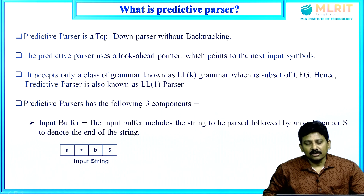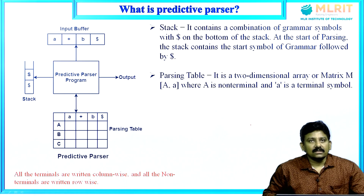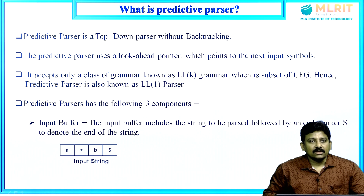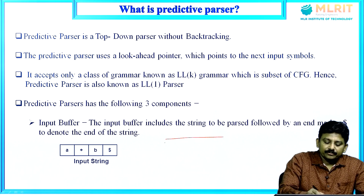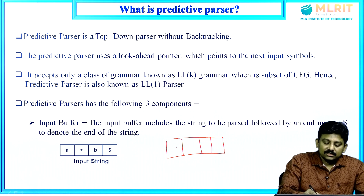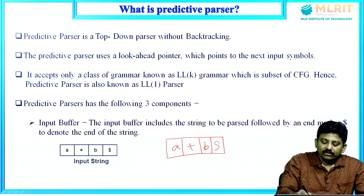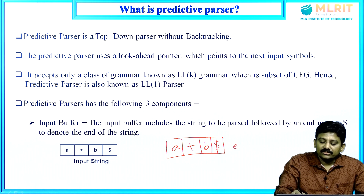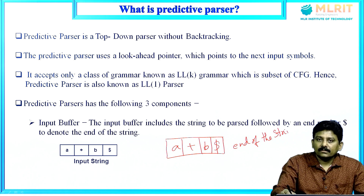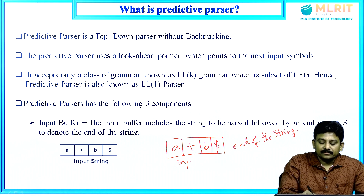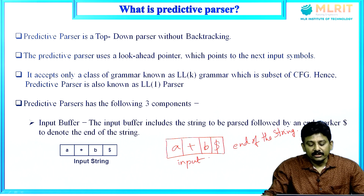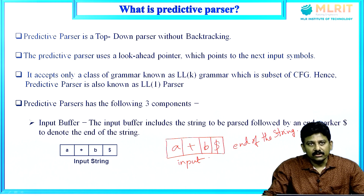Predictive parser has three components: input buffer, stack, and parsing table. The input buffer is a tape on which we place a string like 'a plus b' followed by dollar. Dollar indicates end of the string. The input buffer includes the string to be parsed followed by the end marker dollar to denote the end of the string.